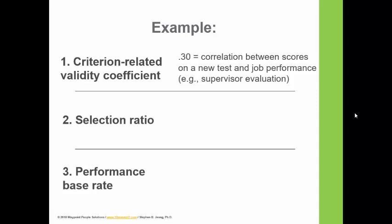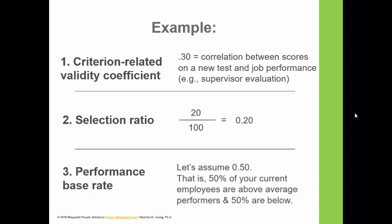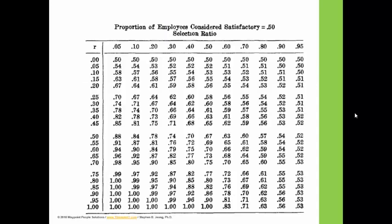Let's go through an example. We have a validity coefficient of 0.30 — the correlation between scores on the new test and job performance. For the selection ratio: 100 qualified applicants, your company chooses 20, so the selection ratio is 0.20. For the performance base rate, we'll use 0.5, meaning 50% of current employees are above average. Now we pull up the Taylor Russell table corresponding to a baseline performance of 0.50.